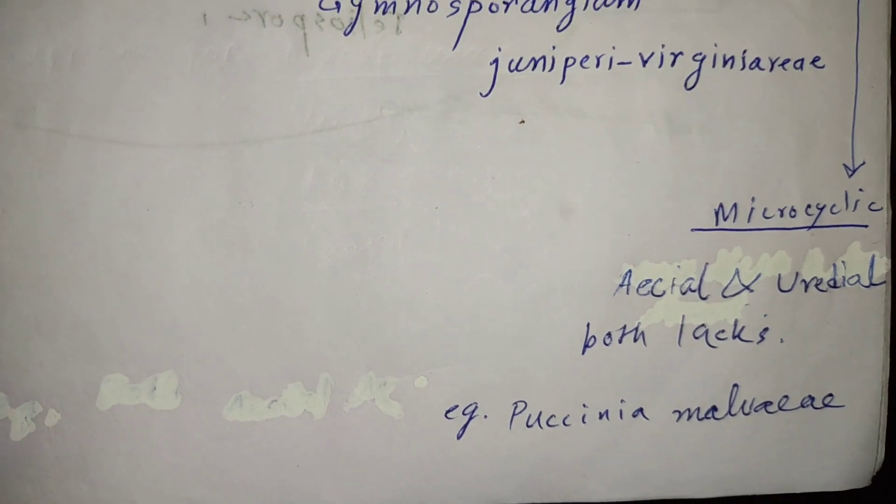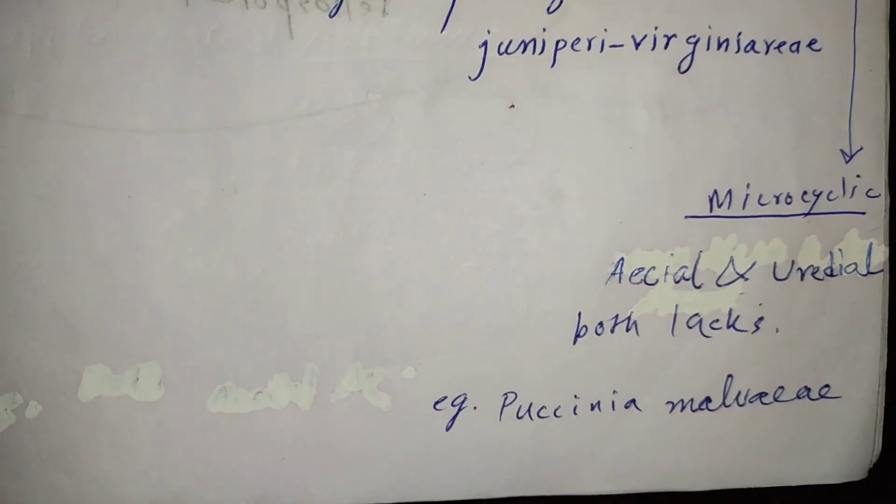The microcyclic life cycle rust fungi lack both the aecial and uredinal stages, so they can show only 3 other types of spores. The example is Puccinia malvacearum, which is the causal organism of cotton rust. That's all for today's short explanation video. Stay tuned for others and subscribe.